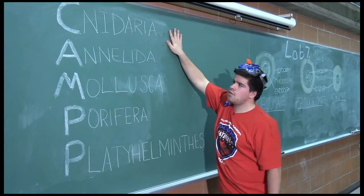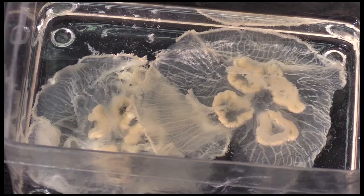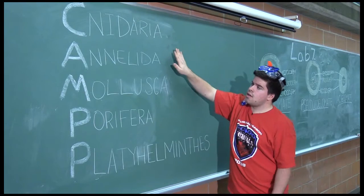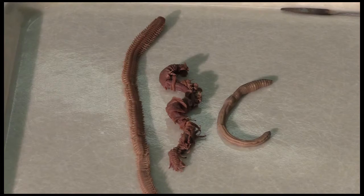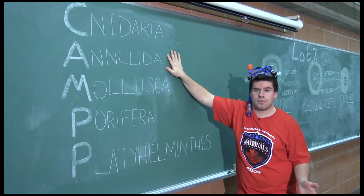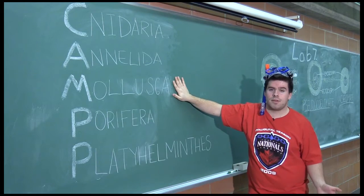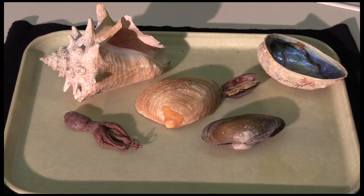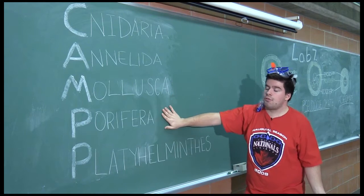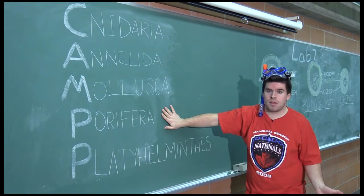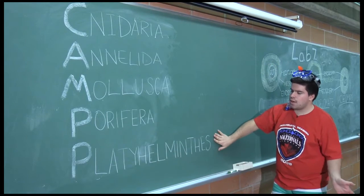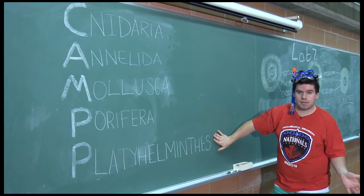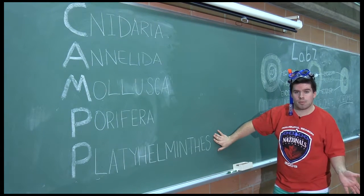The C stands for Cnidaria — that would be your jellyfish. The A stands for Annelida — these are segmented worms like earthworms. The M is Mollusca — this would be octopus, mussels, or clams. The first P is Porifera — these are your sponges. And the last P is Platyhelminthes — these are your flatworms.